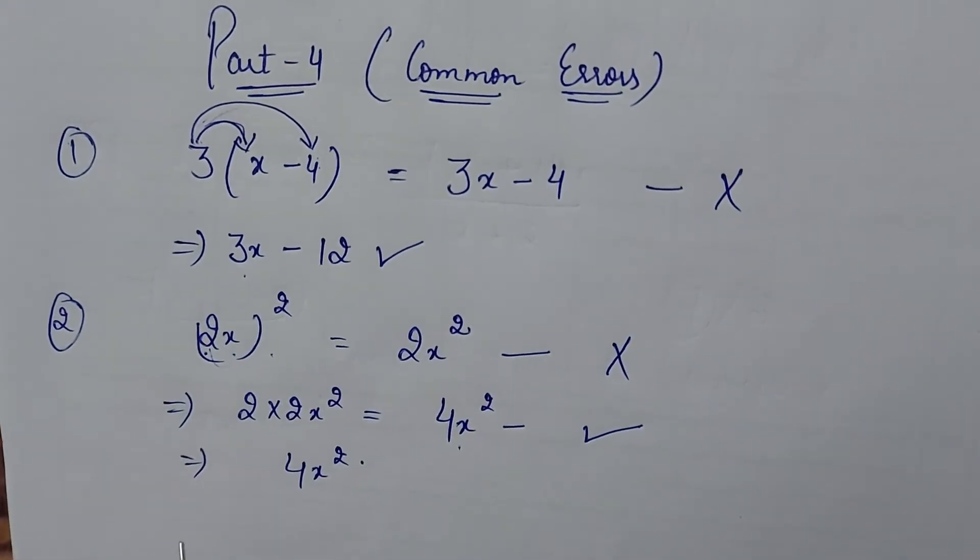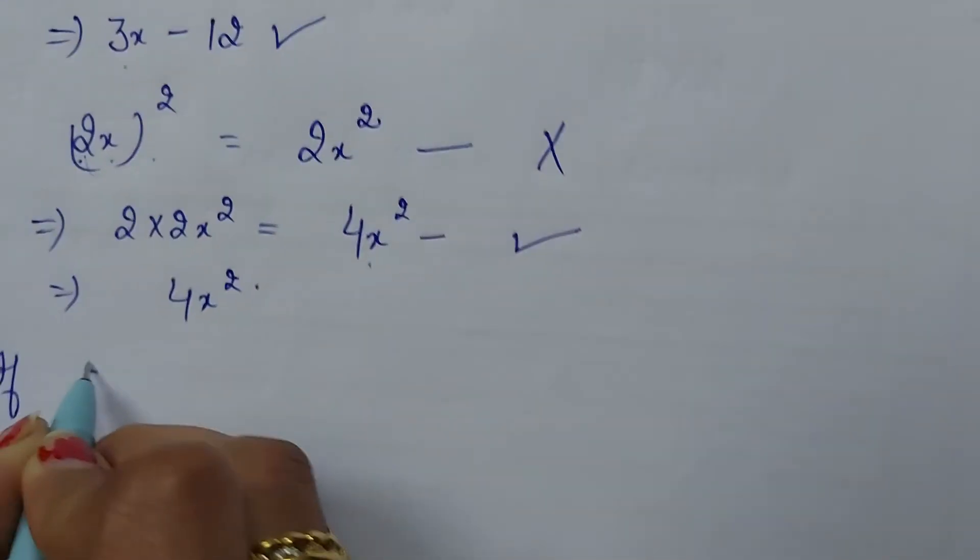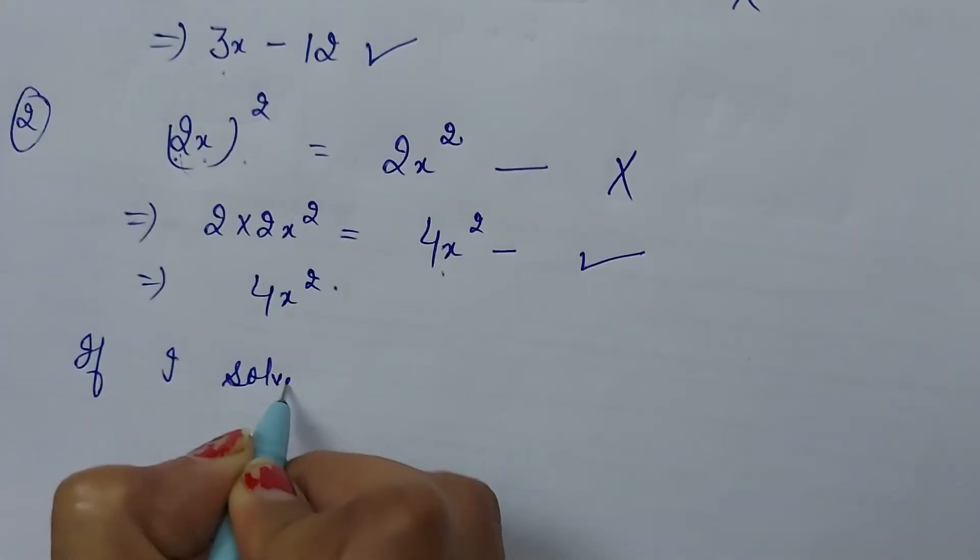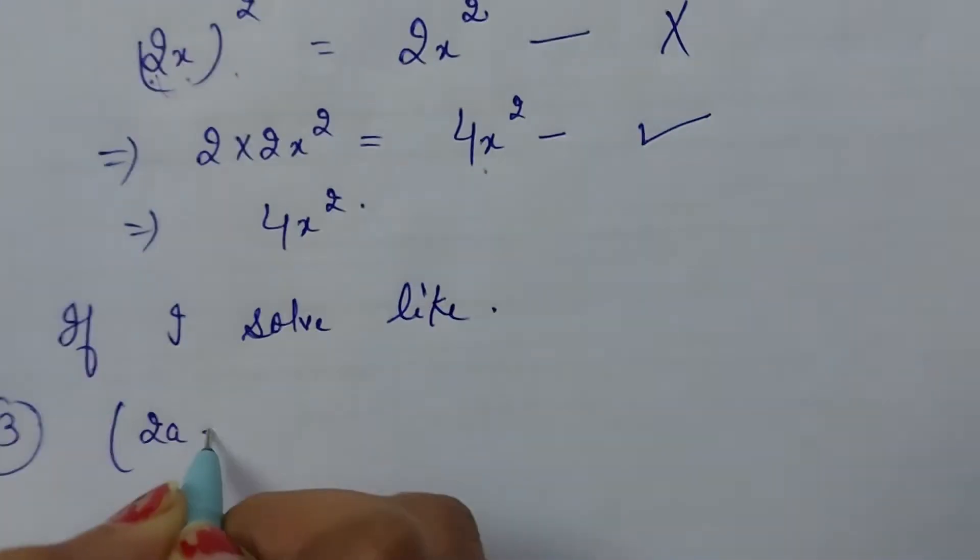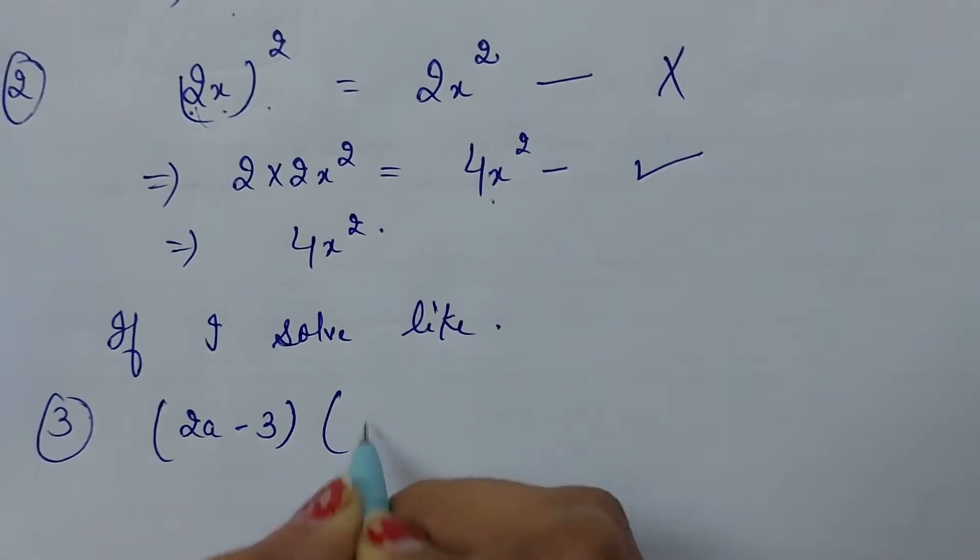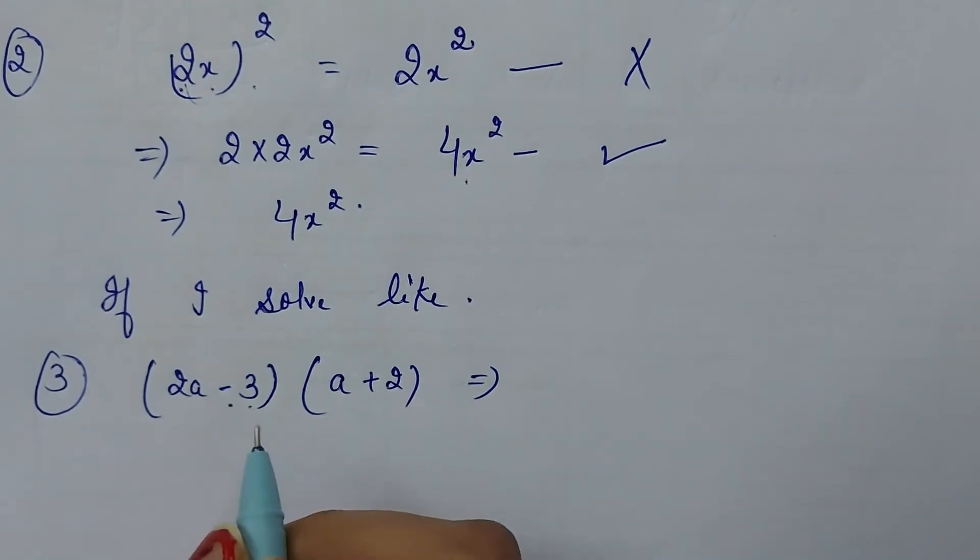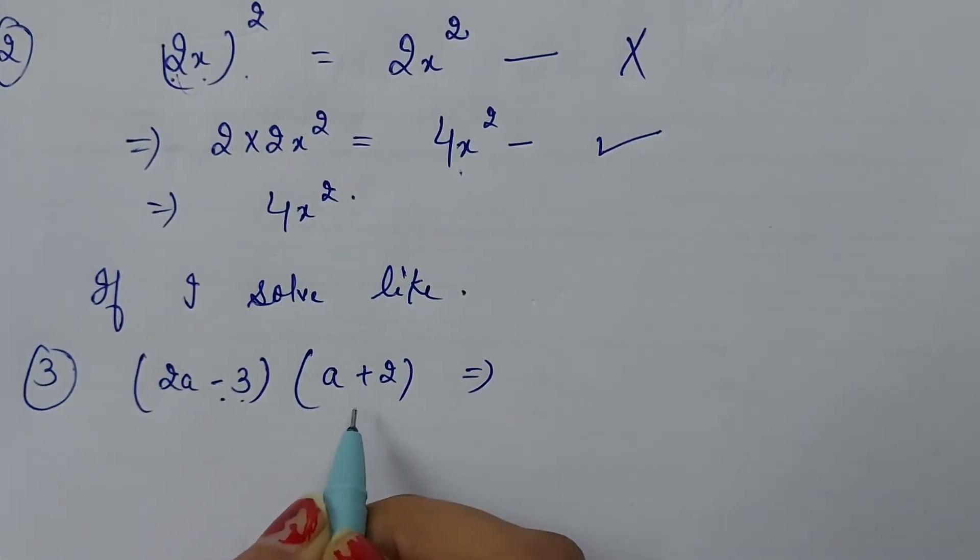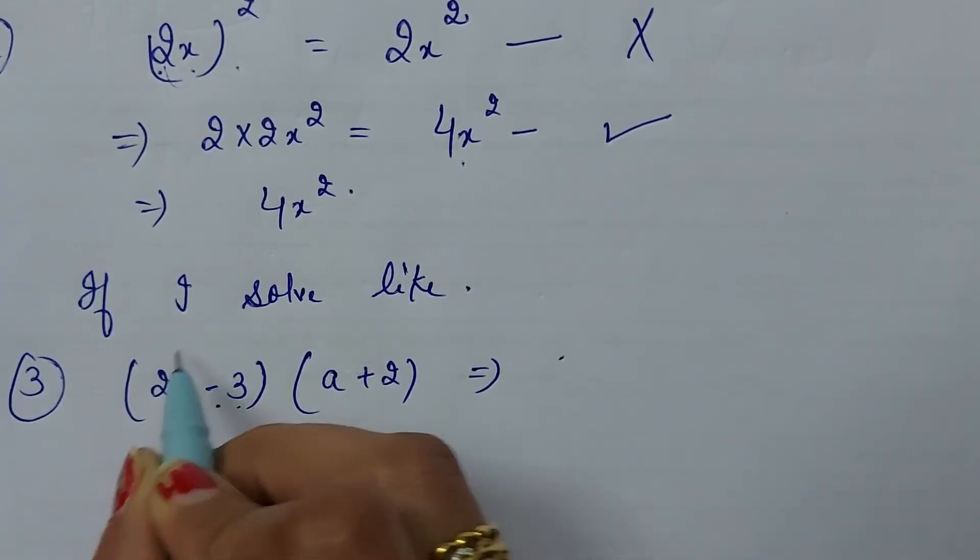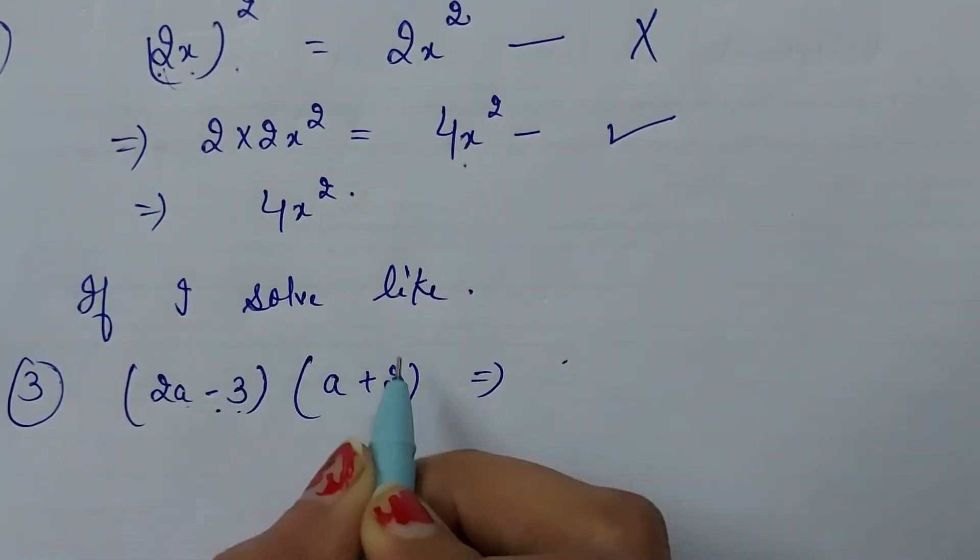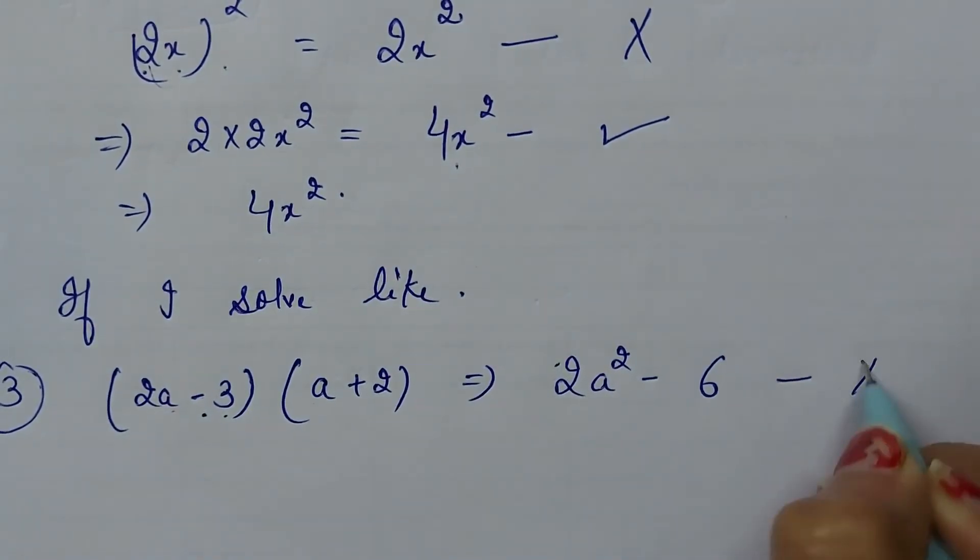Now it's come to the next error. If I solve like 2a minus 3, a plus 2. Yani ki 2a minus 3, a plus 2, bracket mein hai. It means bachche aise karte hain: 2a ko a ke saath multiply karte hain, 3 ko 2 ke saath multiply karte hain. It means 2a square minus 6. No, it's wrong.